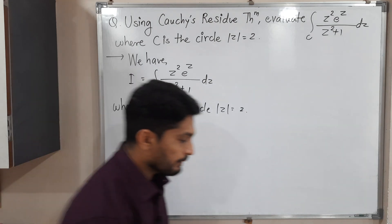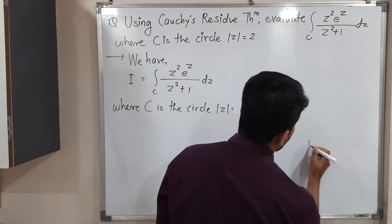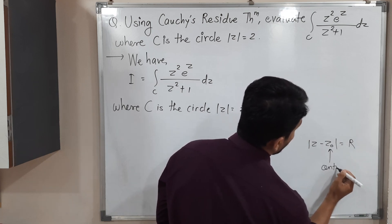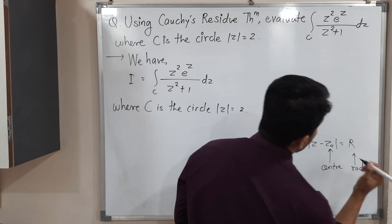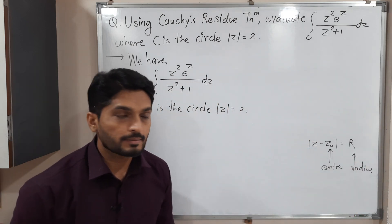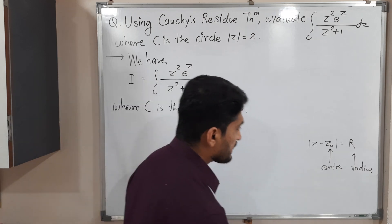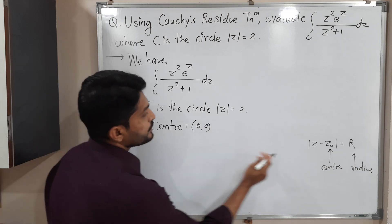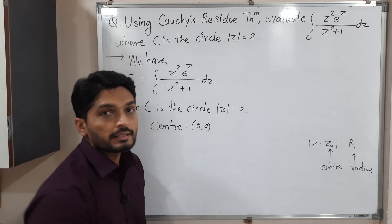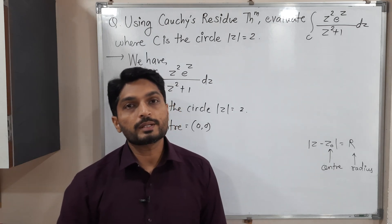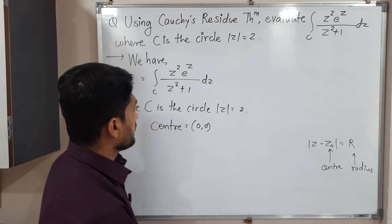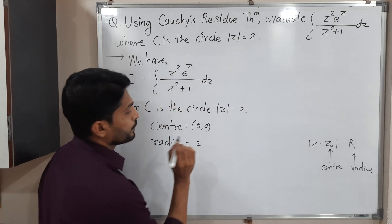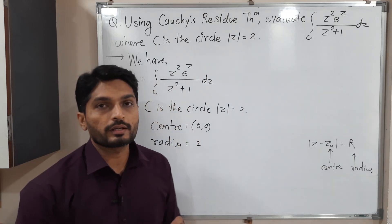Let us compare this equation of the circle with the standard equation of a circle. The standard equation is |z − z₀| = r, where z₀ is the center and r is the radius. Comparing, the center is 0,0 since there is no z₀ term, and the radius is 2. So the given circle has center (0,0) and radius 2.